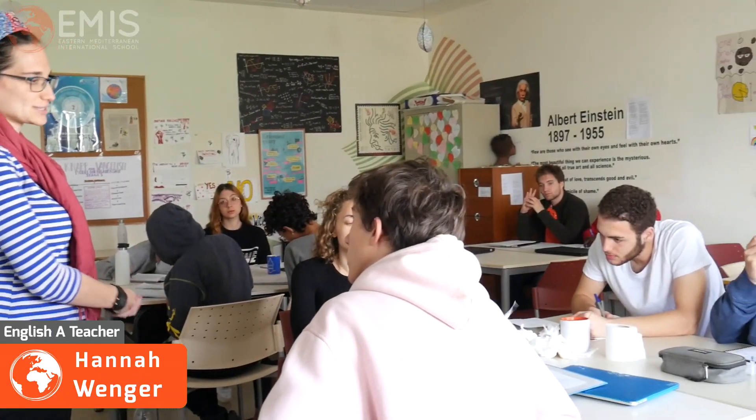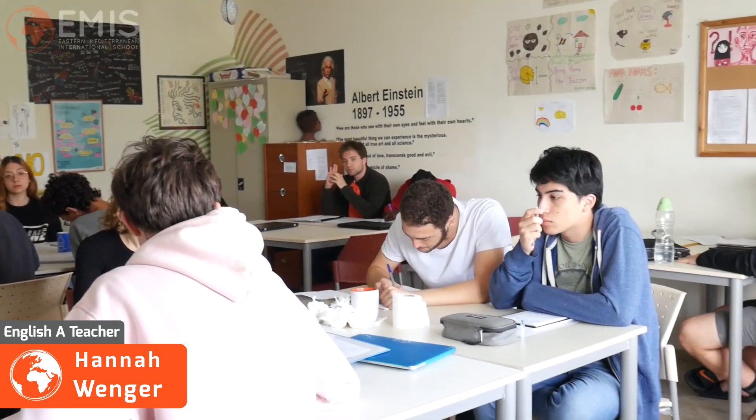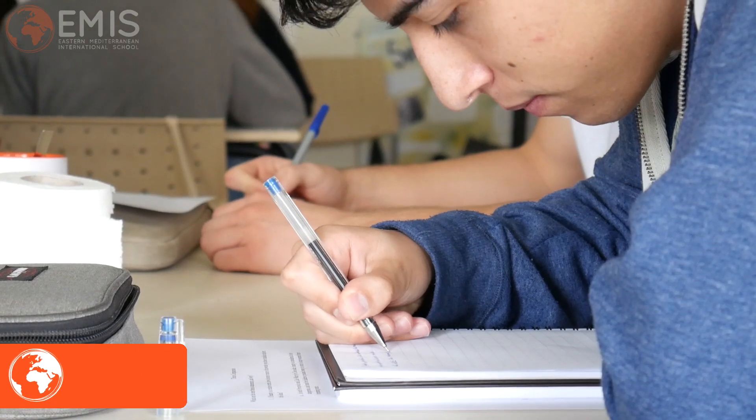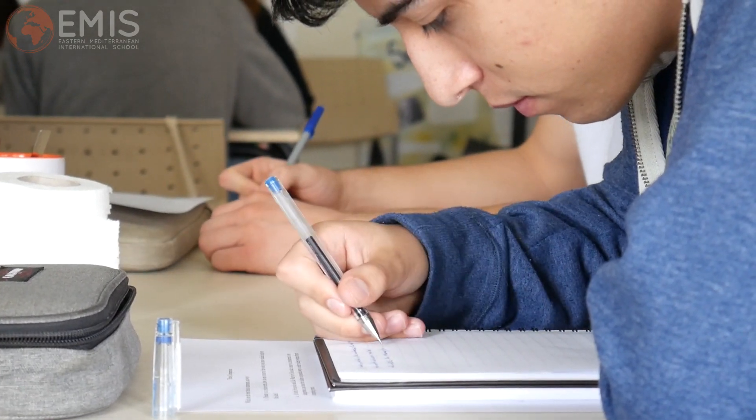English Language and Literature is a course for students at the native speaker level. Students explore both literature and language texts. They unpack things like how power operates in language and how meaning is constructed in literature.